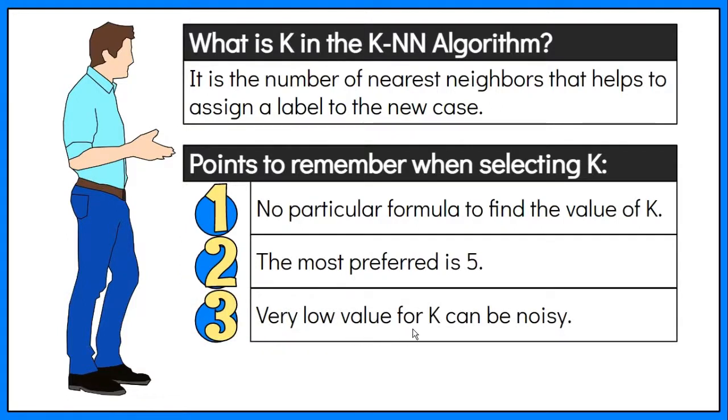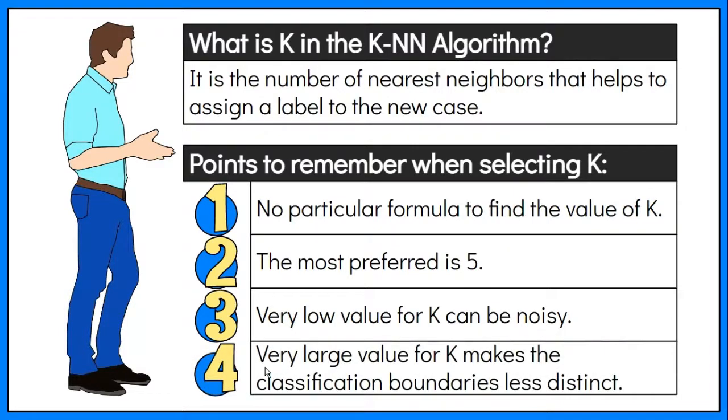In general, remember that a very low value for K, such as 1 or 2, can be noisy so it is not suitable to use. On the other hand, a larger K suppresses the effects of noise but makes the classification boundaries less distinct.